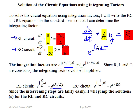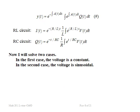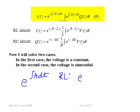After integration, we have the integrating factor with no integral sign — just an exponential. This is what we multiply both sides of the equation by. For the RL circuit, the integral of R over L dt evaluates to E to the R over L times t — no more integration needed.